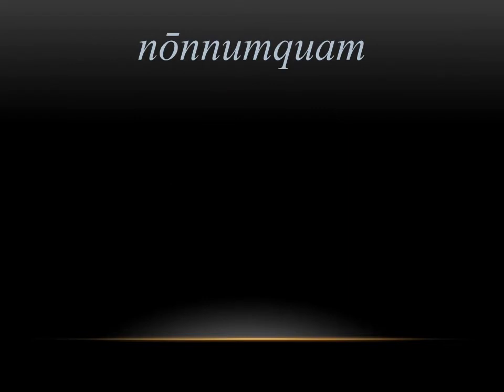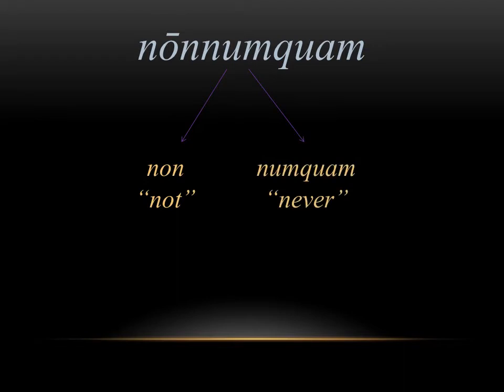The next word is nonnumquam. We want to break it apart into its two different pieces: non, which means not, and numquam, which means never. When you put them together, you get the English translation sometimes. It makes sense because literally it means not never, which we would translate as sometimes.